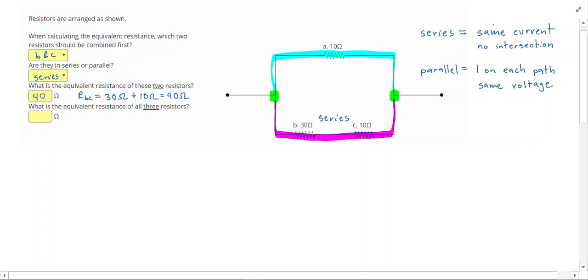The next step is I'm actually going to redraw this circuit. But instead of drawing resistor B and C separately, I'm going to combine them together into one. So here's the left side. I still go up. I still have A, which is still a 10 ohm resistor.